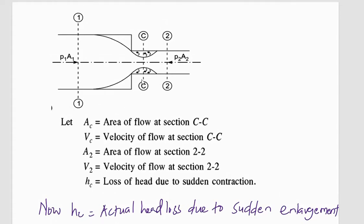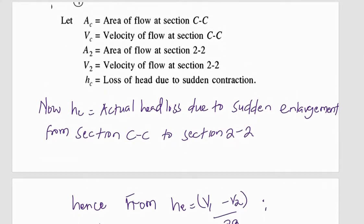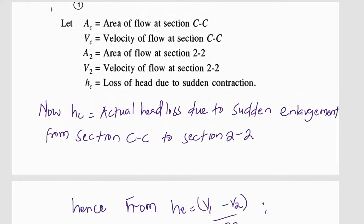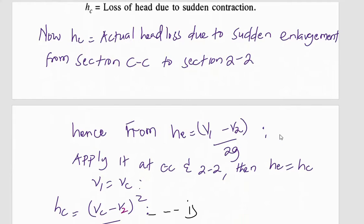Having understood that, let us look at the area Ac being the area of flow at section C-C, Vc the velocity of flow at section C-C, area A2 being the area of flow at 2-2, V2 the velocity of flow at section 2-2, and hc being the loss of head due to sudden contraction. Now since hc is due to a sudden enlargement from section C-C to section 2-2, if we remember this formula for calculating head loss due to sudden enlargement: